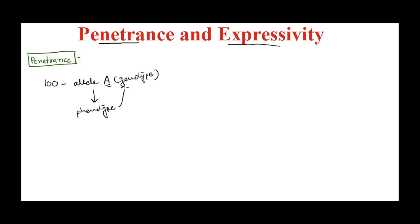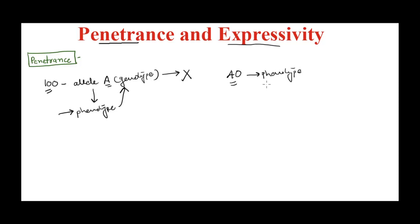We are expecting a phenotype associated with this genotype. But what happens is, due to certain factors, not all 100 individuals would show the phenotype associated with this genotype. That means not all 100 will necessarily express it. Let's say only 40 out of 100 show the phenotype associated with this genotype. Penetrance is always expressed in percentage, so 40 out of 100 becomes 40%.